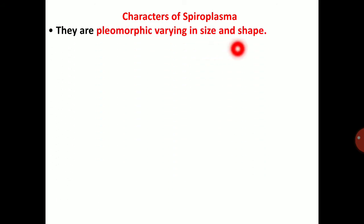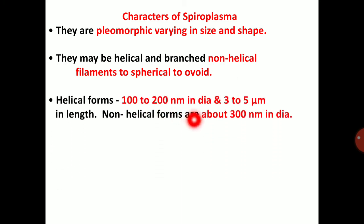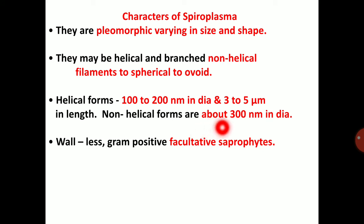Next, we will study about characters of Spiroplasma. Spiroplasma is also pleomorphic in nature — varying in size and shape. They may be helical and branched non-helical filaments to spherical to ovoid. Helical forms are 100 to 200 nanometers in diameter and 3 to 5 micrometers in length. Non-helical forms are about 300 nanometers in diameter. They are wall-less, gram-positive, and facultative anaerobes in nature.